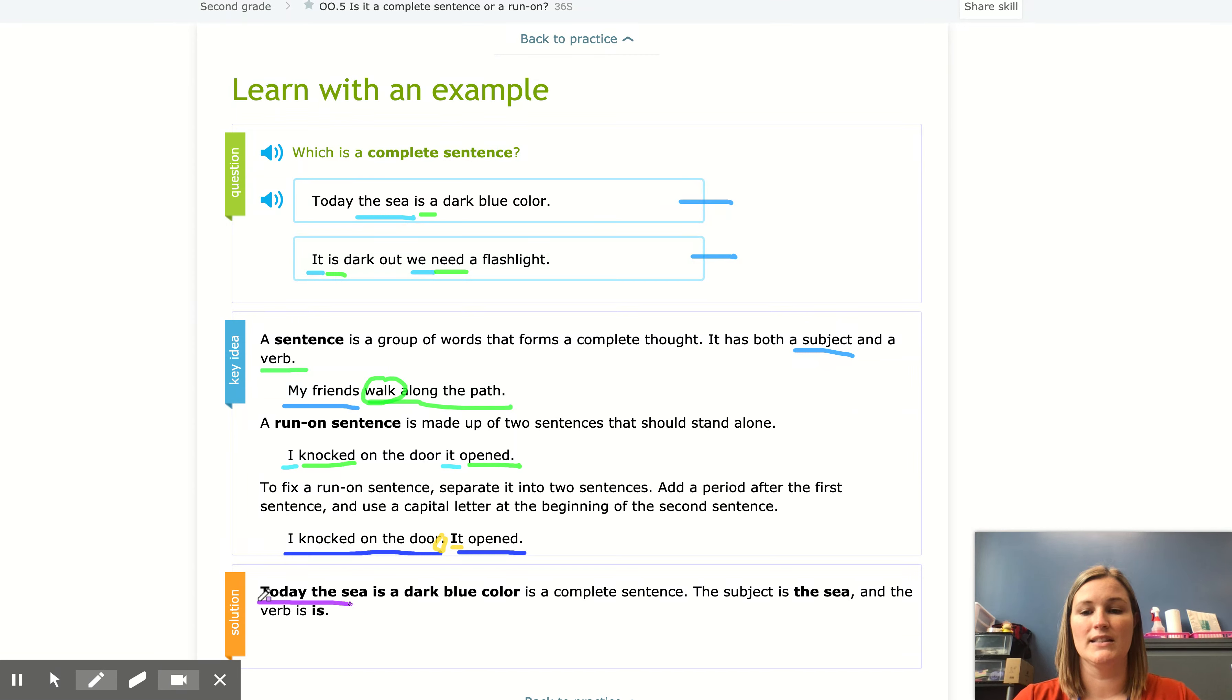It would be today the sea is a dark blue color so this is going to be our answer and that is because it is a complete sentence. It has one subject the sea and it has one verb which is is. This one is a run-on sentence. Let me know if you guys need any help today.